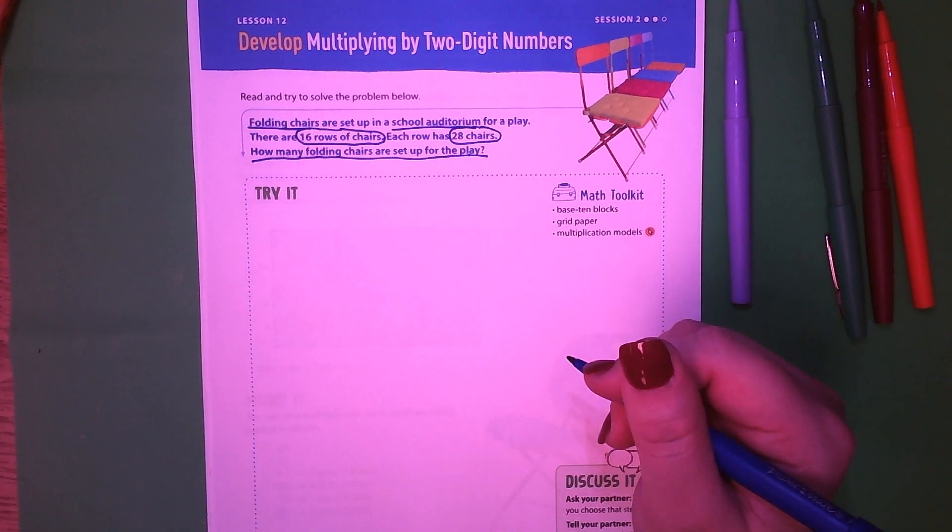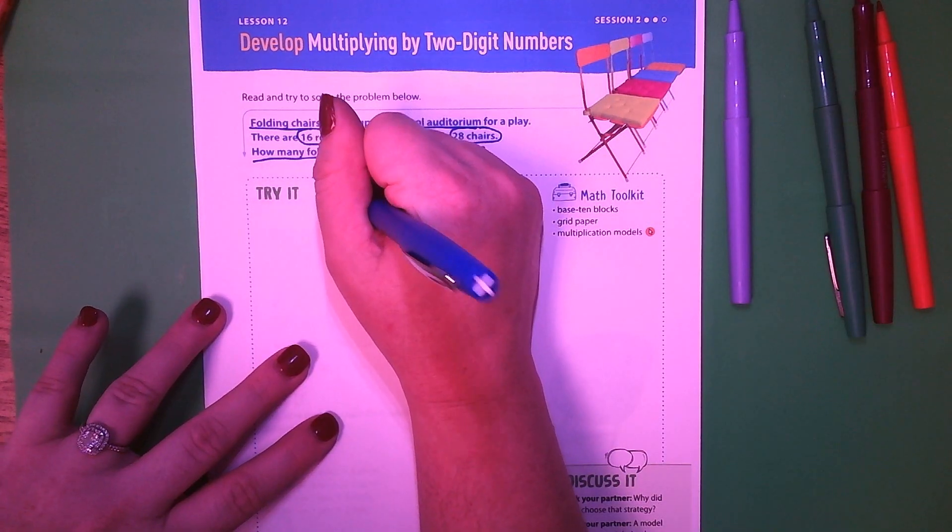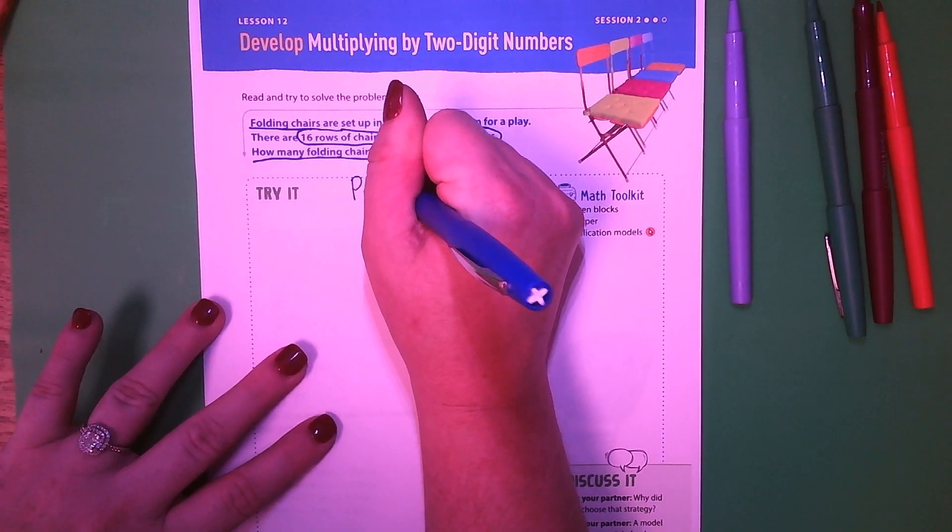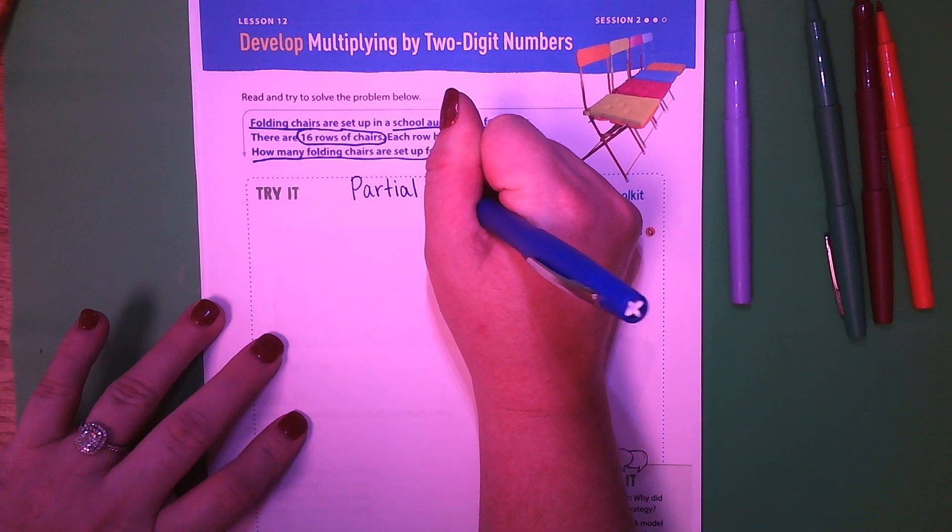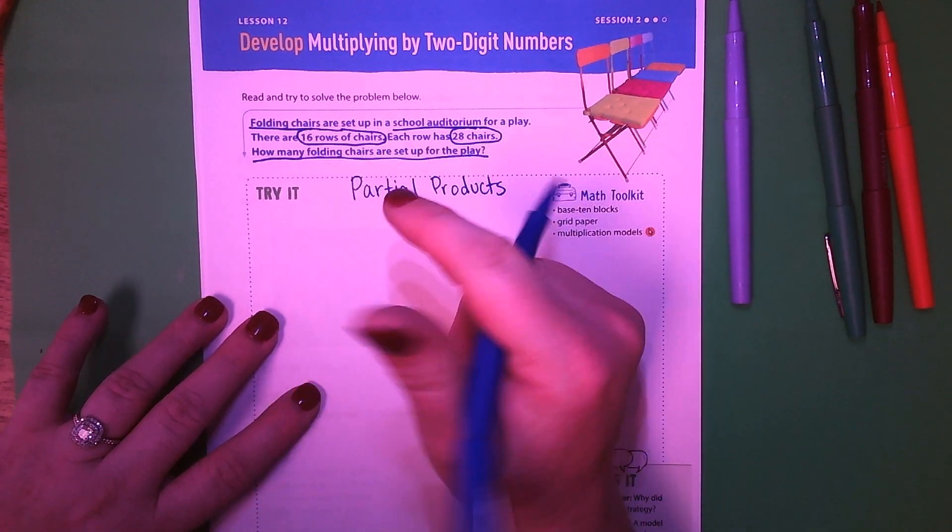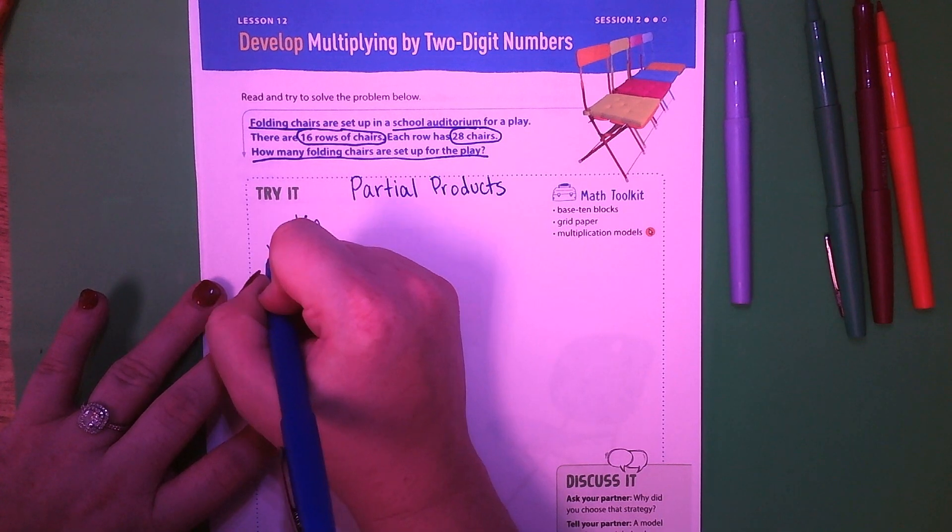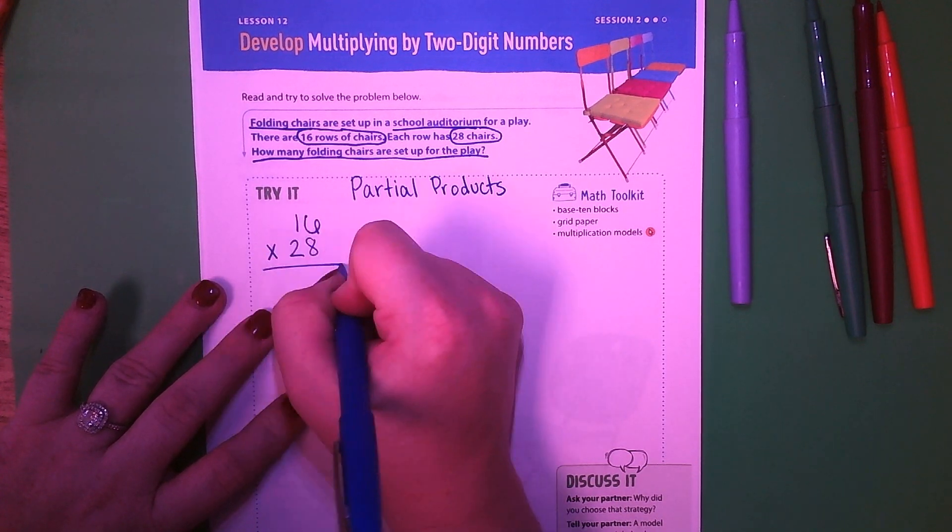What information is important? Well, it's important to know that we have 16 rows of chairs, and it's also important to know that we have 28 chairs in each row. What am I trying to find out? I'm trying to find out how many folding chairs are set up for the play. Can I draw a model? Yes, we can draw a model, but first we're going to do the full partial products now today.